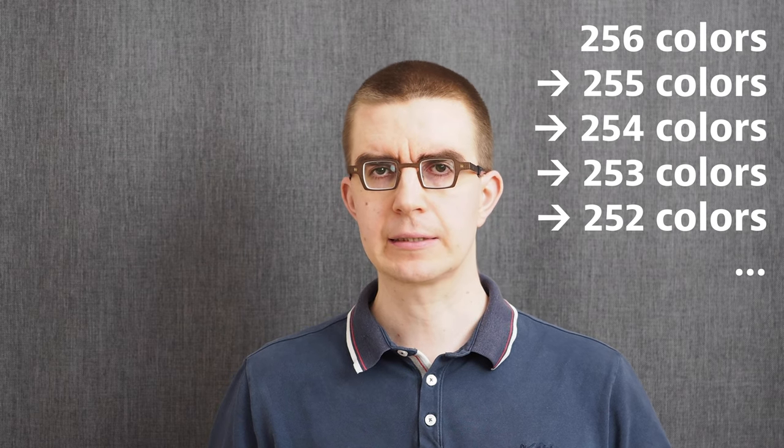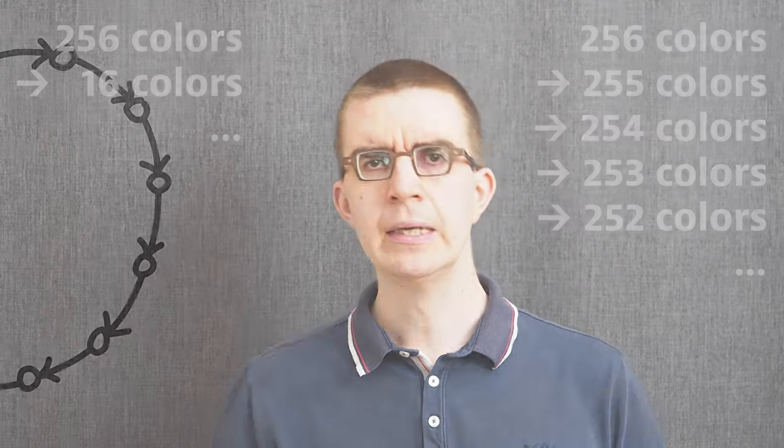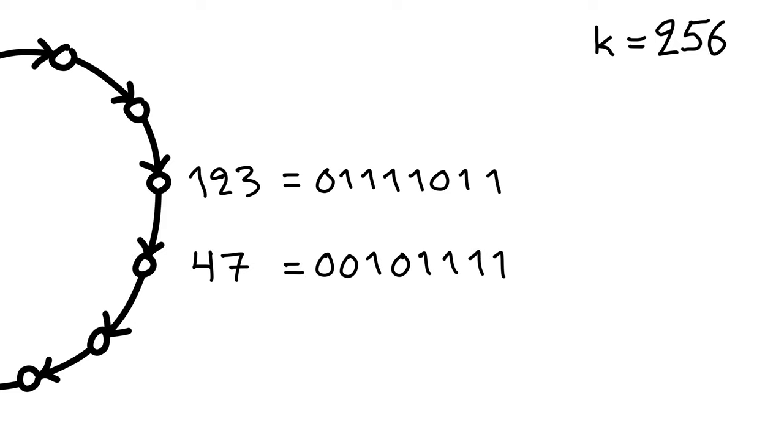If you are given a coloring with 256 colors, we can in one step reduce the number of colors to 16. Let's see how it goes. Let's look at some fragment of the cycle here. Our original colors are numbers between 0 and 255. We can represent these using binary numbers with 8 bits. Nothing happened yet, we just wrote the colors in base 2.